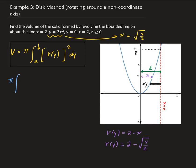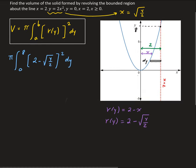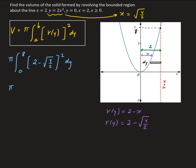So we're going to have π times the integral from 0 to 8 of (2 minus √(y/2))² dy. Expanding that out: 2 minus √(y/2) times 2 minus √(y/2) gives us 4 minus 4 times √(y/2) plus y over 2.